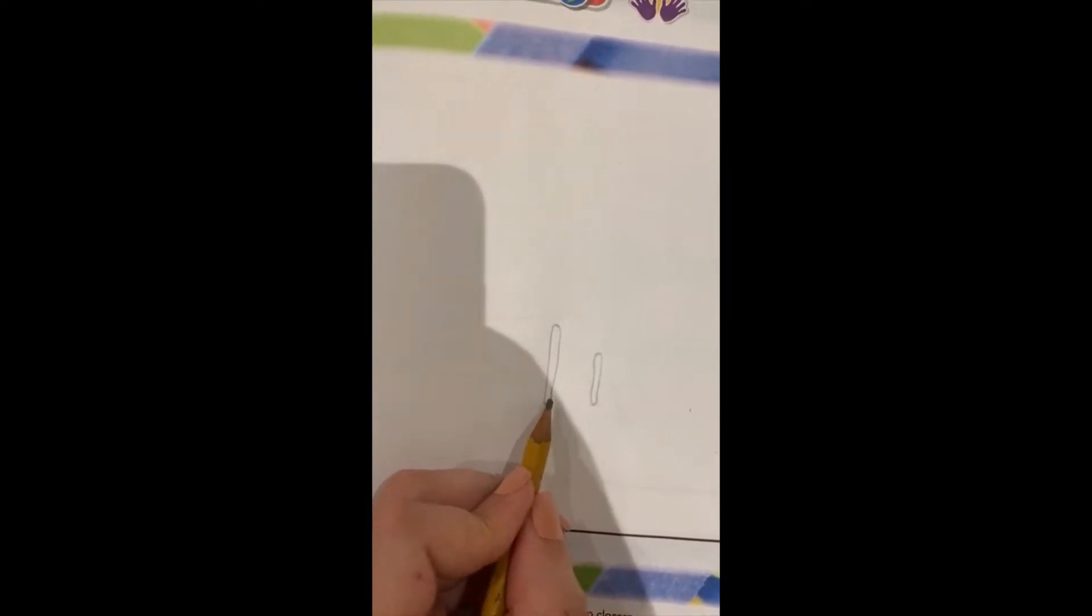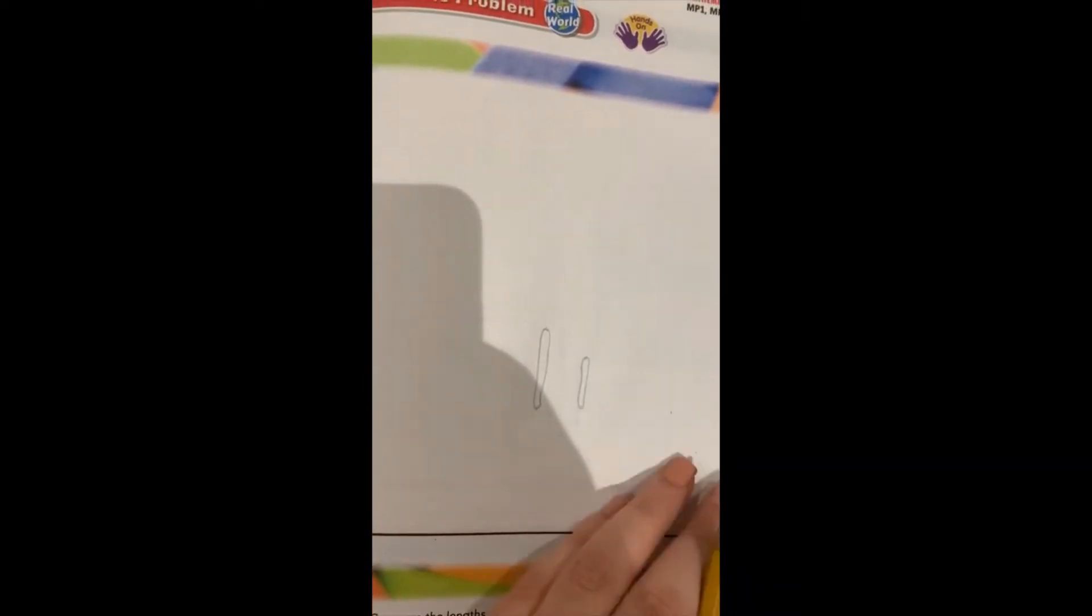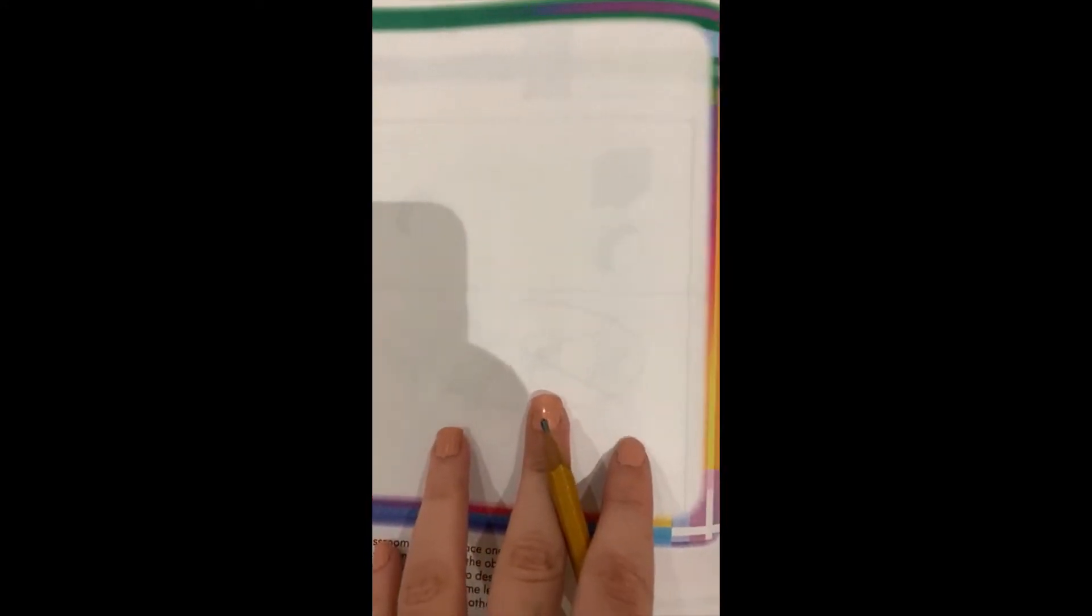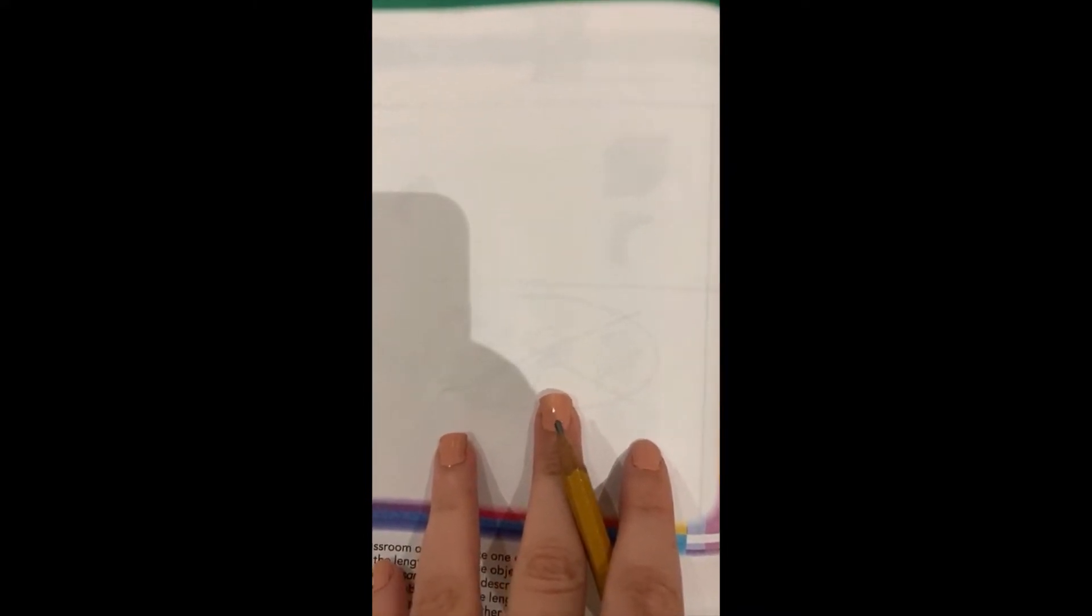Again, this stroke is taller or higher. This stroke is shorter. Excellent! Let's go to the next page. And here in this page, I want you to draw two objects we can find in the classroom.